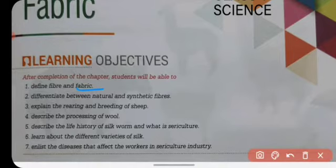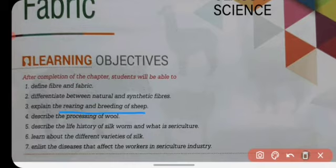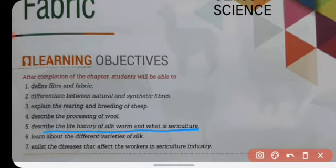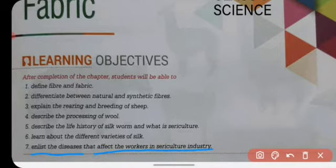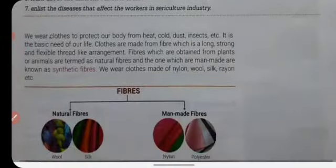After completion of the chapter you will be able to define fiber and fabric, differentiate between natural and synthetic fiber, understand the rearing and breeding of sheep, describe the processing of wool, know the life history of silkworm, what is sericulture, learn about the different varieties of silk, and enlist the diseases that affect workers in the sericulture industry.